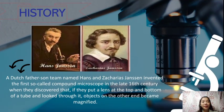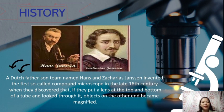So let us move on to the history of the compound microscope. There are two scientists — a Dutch father-and-son team named Hans and Zacharias Janssen — who invented the first so-called compound microscope in the late 16th century. They discovered that if they put a lens at the top and bottom of a tube and look through it, objects on the other end can become magnified.